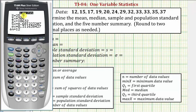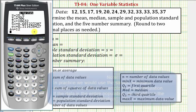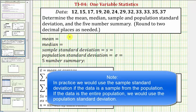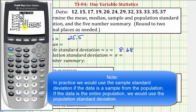So the mean is 25.5. The sample standard deviation to two decimal places would be 8.68, and the population standard deviation to two decimal places would be 8.31. Let's go ahead and record this.